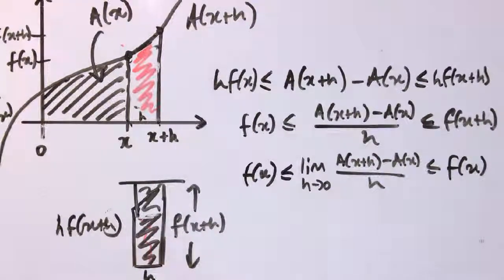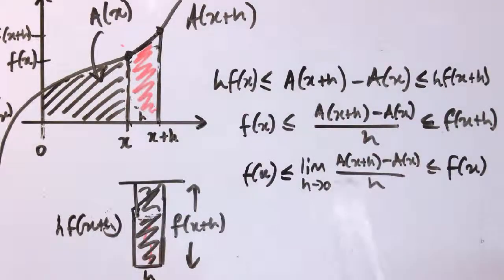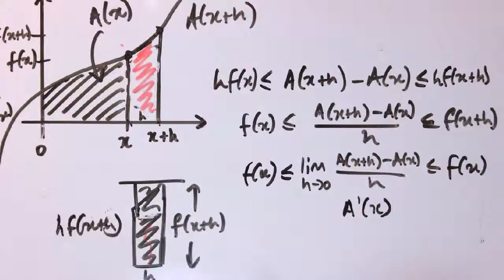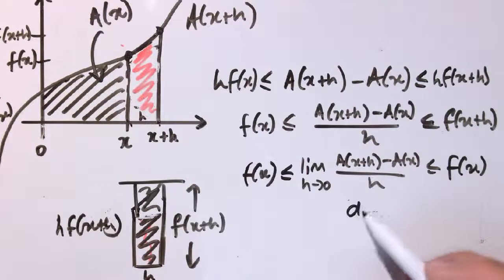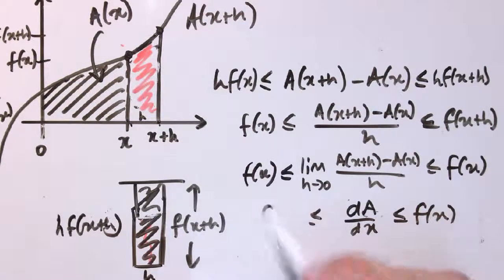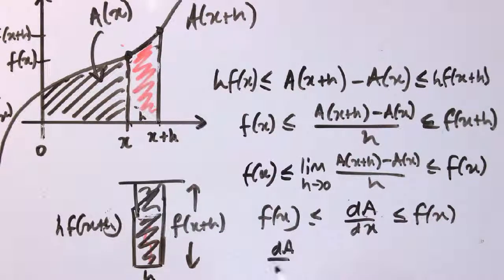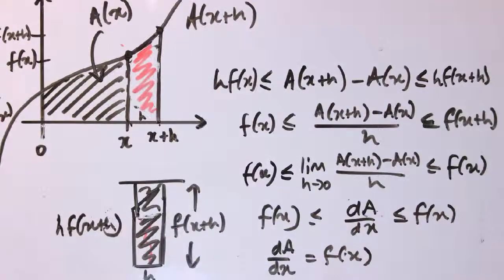The central expression is exactly the form of the first-principles derivative — we had f(x + h) − f(x) over h before; now it's the same thing with A. So this is dA/dx, the derivative of A with respect to x. Since dA/dx is both greater than or equal to f(x) and less than or equal to f(x), it must equal f(x): dA/dx = f(x).